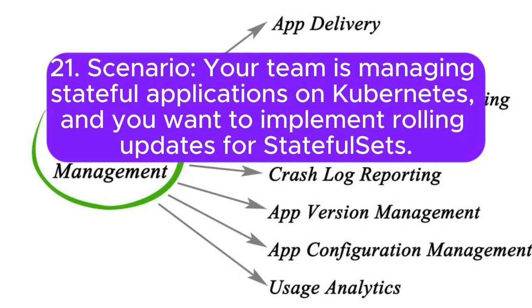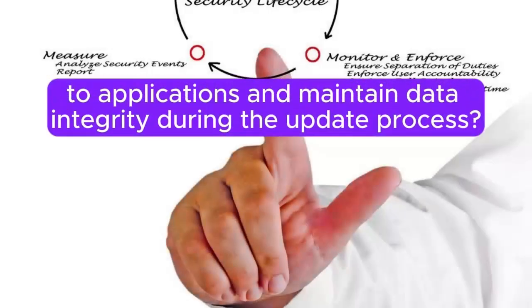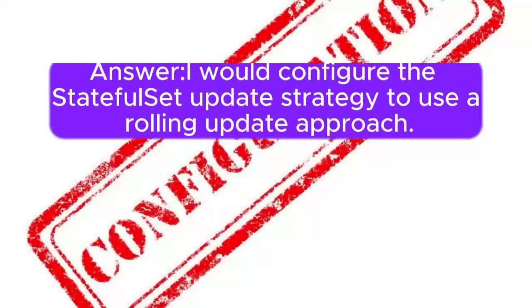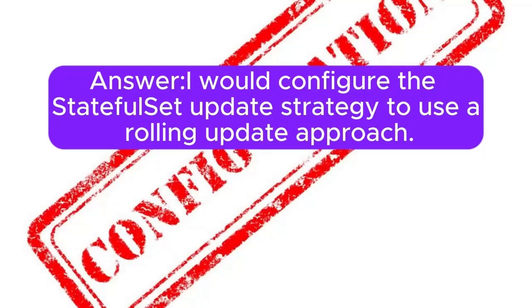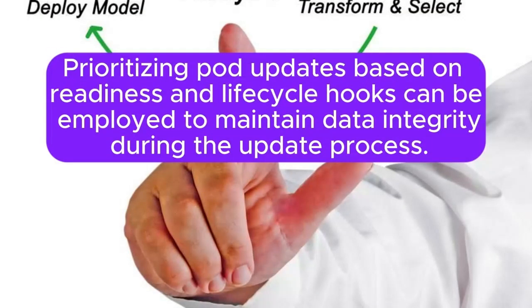Scenario 21: Your team is managing stateful applications on Kubernetes, and you want to implement rolling updates for StatefulSets. How would you configure StatefulSet updates to ensure minimal disruption to applications and maintain data integrity during the update process? Answer: I will configure the StatefulSet update strategy to use a rolling update approach. This ensures that pods are updated one at a time, allowing for seamless transitions and minimal disruption. Prioritizing pod updates based on readiness and lifecycle hooks can be employed to maintain data integrity during the update process.